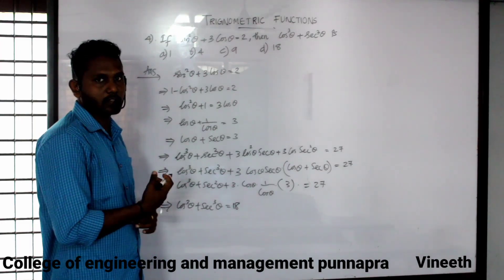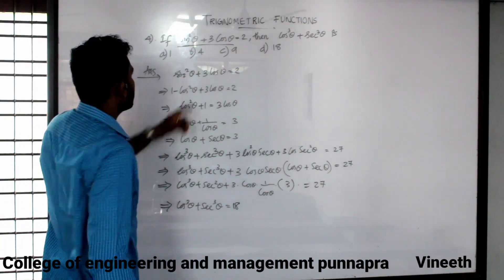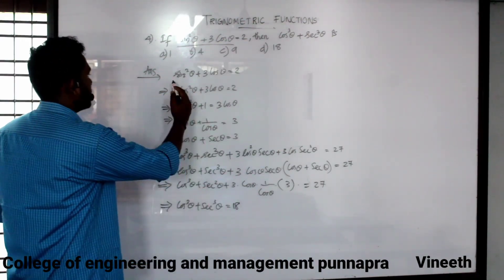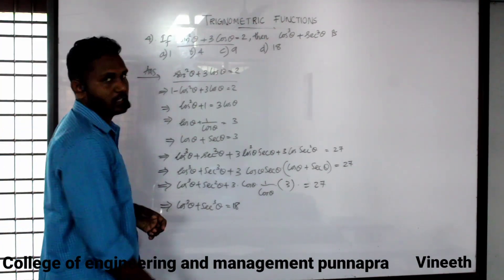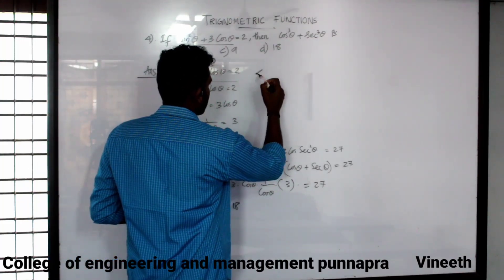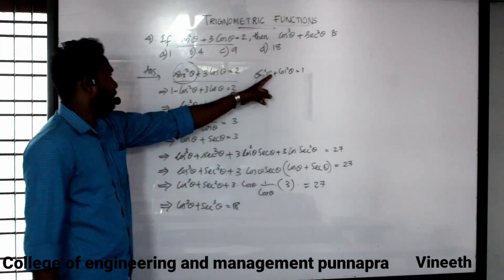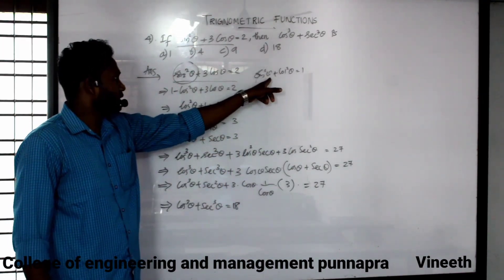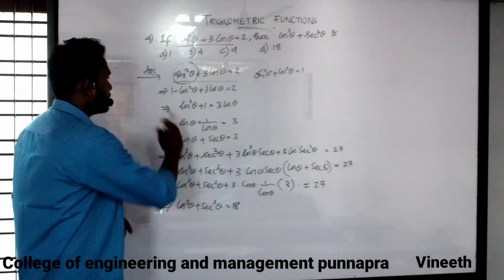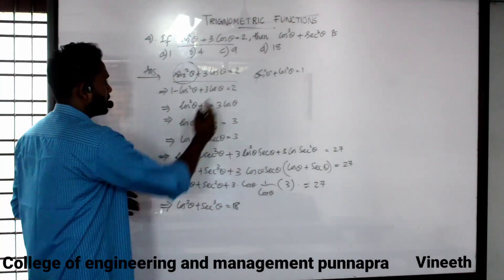We take the information and answer number two. Sin square theta plus 3 cos theta is equal to 2. Now, the equation can be rearranged — cos squared theta plus 1 is equal to 3 cos theta.